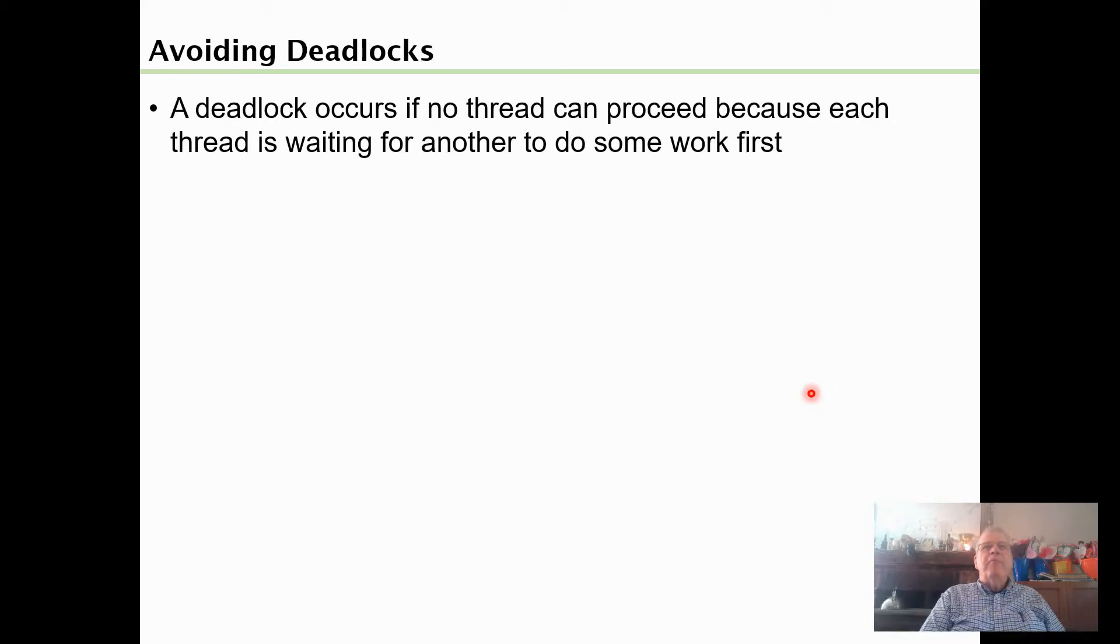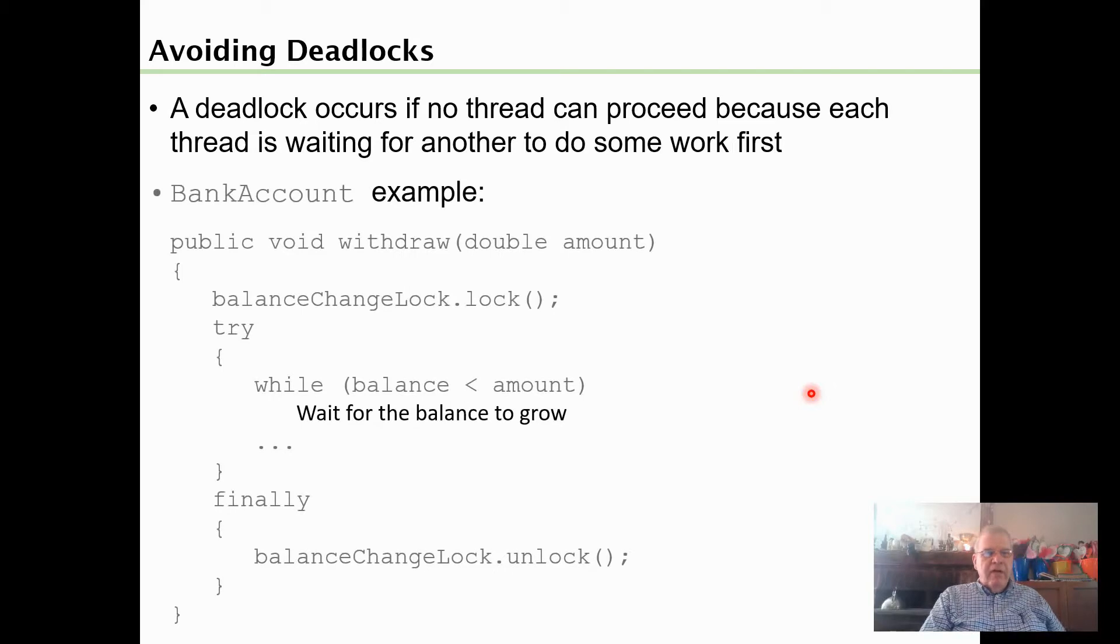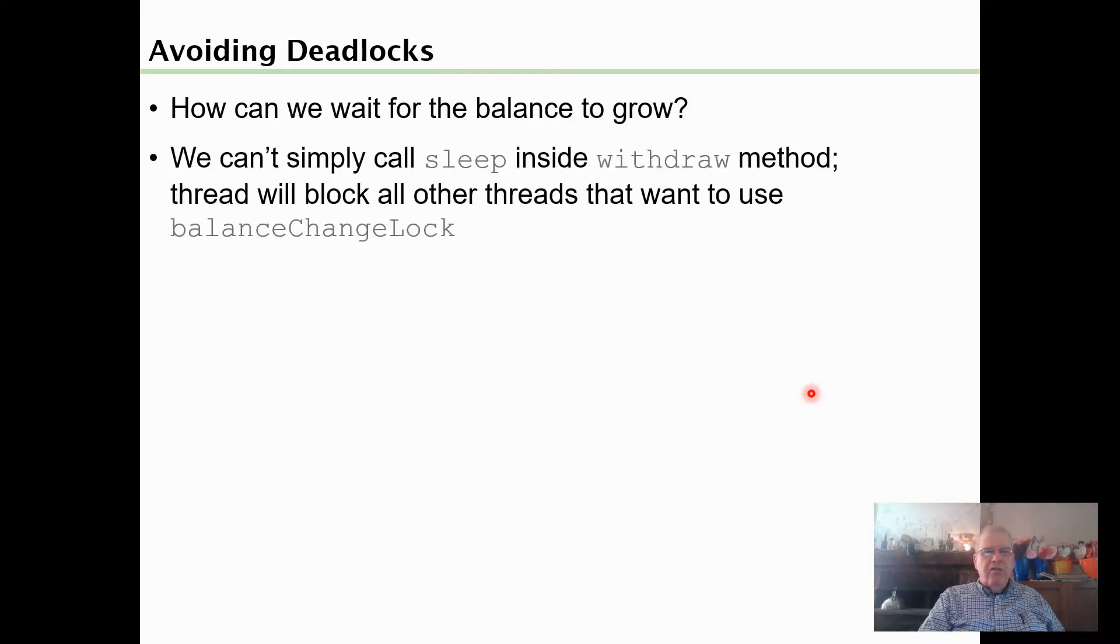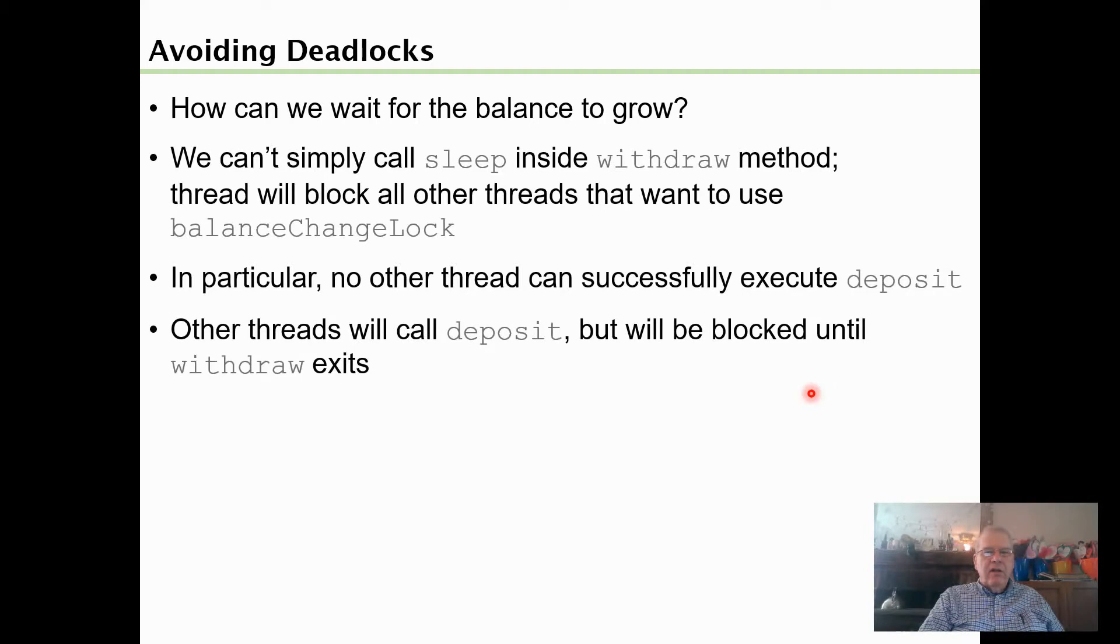If we omit the call to unlock, then nothing changes and deposit continues to have the object locked. I mentioned that we had problems that were solved, and those solutions caused other problems, and those solutions caused other problems. Another problem that's caused is deadlock. In this example, withdrawal calls a lock and then it's going to wait for the balance to grow, but it's got the lock on the amount and so it can't ever get to unlock. We can't just call sleep because the thread will block all other threads that want to use balanceChangeLock, so no other thread can successfully execute deposit until withdraw exits. But withdraw doesn't exit until it has funds available, and therefore we have deadlock.